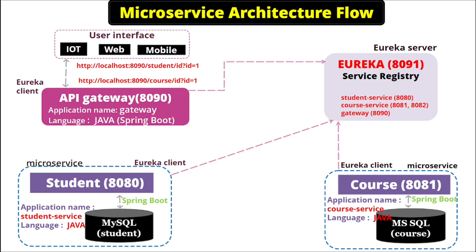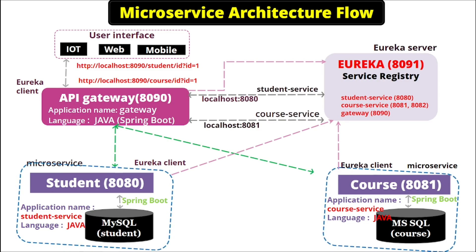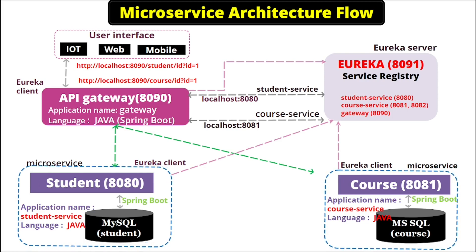In the last video we saw that whenever we deploy our microservices, they register themselves to the Eureka Server with their application name, port, and IP. Whenever the user interface requires data, it calls the API Gateway through a URL, the API Gateway scans that URL and gets the application name, then gets the address of the particular microservice from Eureka Server and calls it. In microservice architecture there could be many microservices, and there is a good chance that one microservice needs to call another.